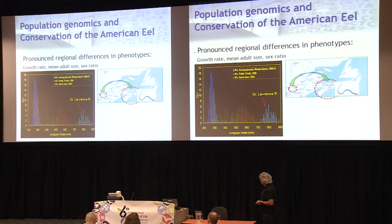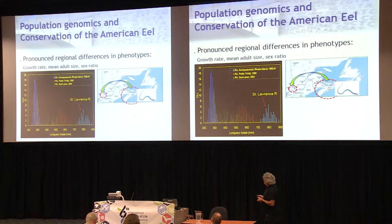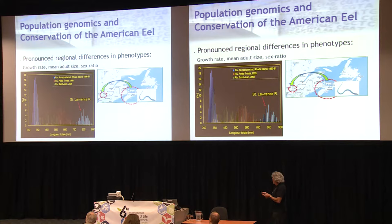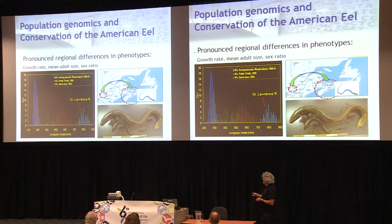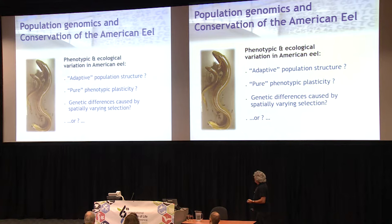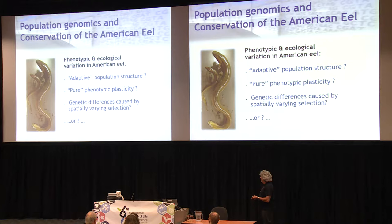More intriguingly, every eel biologist until recently thought this is all plasticity — all influenced by the environment. But there have been some translocation experiments. Glass eels, the life stage just coming from the ocean approaching the coast, were translocated from the Maritimes — from the brackish water habitat — and transferred to Lake Ontario. Within a few years, instead of becoming long-lived large females, they started to sexually mature, either males or females, and migrate back at a much younger age — like five years of age as opposed to 20. So the phenotype is strikingly different, and obviously it's not only the environment at play. The question became: is this adaptive population structure, pure phenotypic plasticity, genetic differences caused by spatially varying selection, or something else?